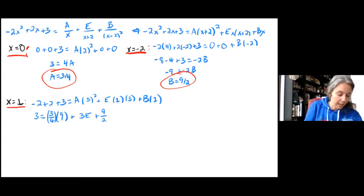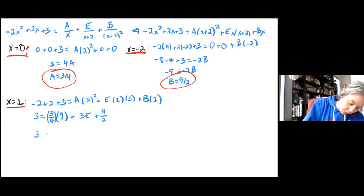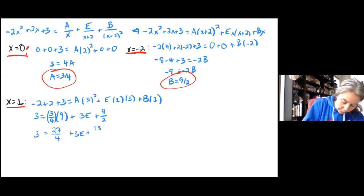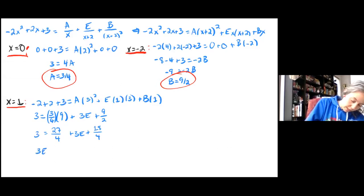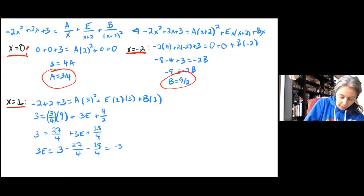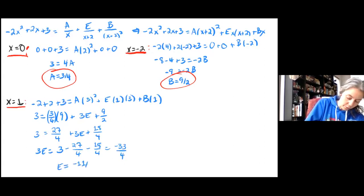That gives me 3 equals 27/4 plus 3E plus 18/4. So 3E equals 3 minus 27/4 minus 18/4, which equals negative 33/4, giving me E equals negative 11 over 4.